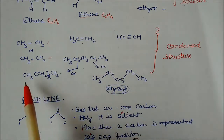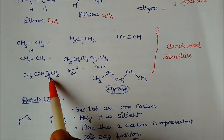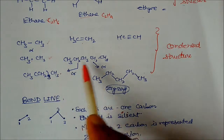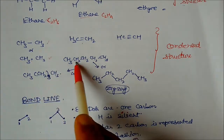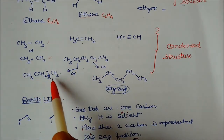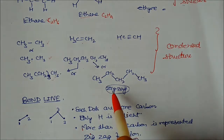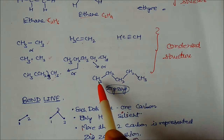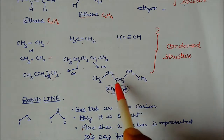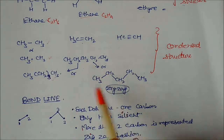For a longer chain, for example CH3 with CH2 repeated three times and ending in CH3, this condensed formula can also be written in a zigzag form going up and down. All of these representations are condensed structures.